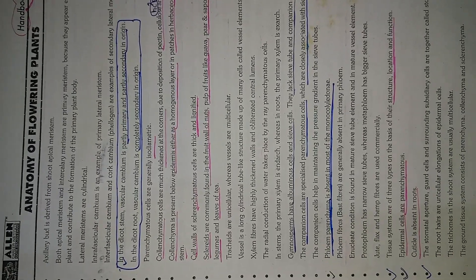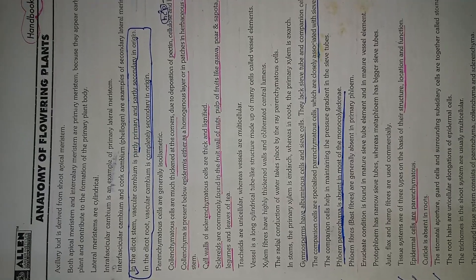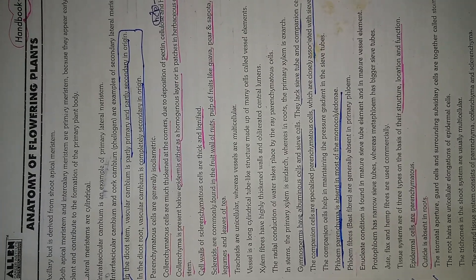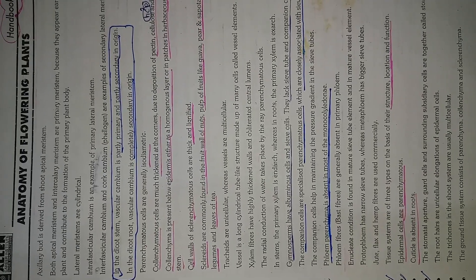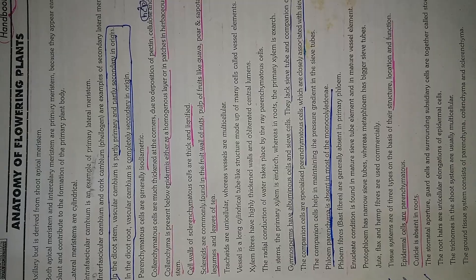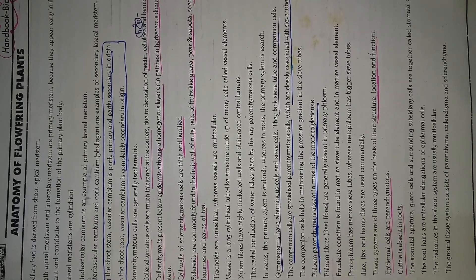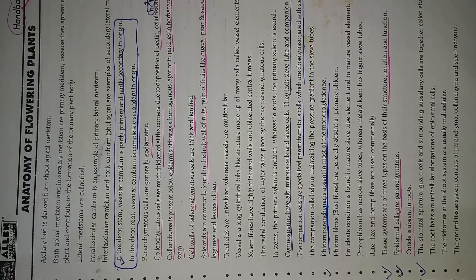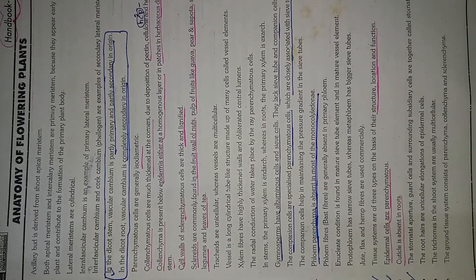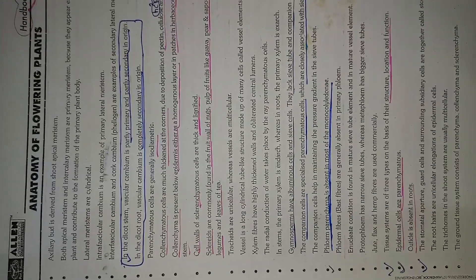Next, lateral meristems are the cylindrical meristems. Interfascicular cambium is an example of primary lateral meristems. Interfascicular cambium and cork cambium and phellogens are examples of secondary lateral meristems. In dicot stems, cork cambium is particularly primary and particularly secondary in versions.